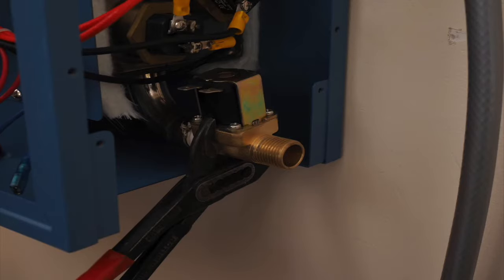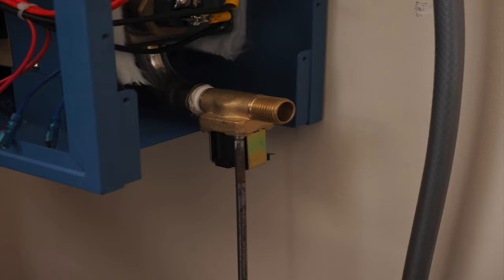Rotate the valve so the solenoid points down. Be prepared with a bucket. Remove the four screws from the valve. Be careful not to lose the screws, the plunger, or the spring.